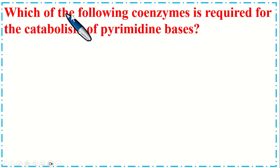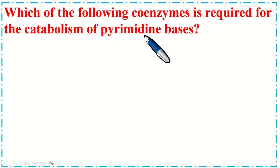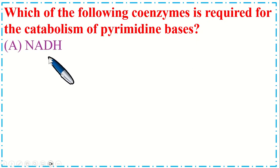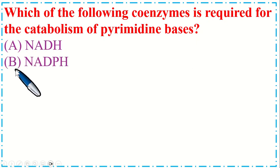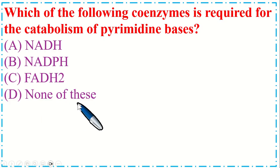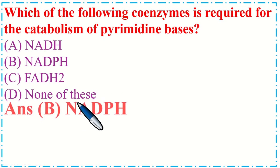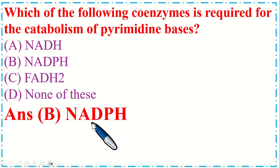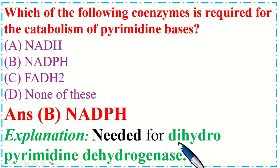Which of the following coenzymes is required for the catabolism of pyrimidine bases? Option A. NADH, B. NADPH, C. FADH2, and D. None of these. The correct option is B, NADPH — needed for dihydropyrimidine dehydrogenase.